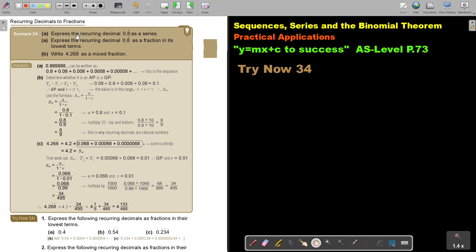We are going to focus in this video on recurring decimals to fractions. So express the recurring decimal as a series. So I first write it out. That dot means the 8 is repeating. So it's 0.8 plus 0.08 plus 0.008 and so I form the sequence. Then express the recurring decimal 0.8 as a fraction in its lowest terms.